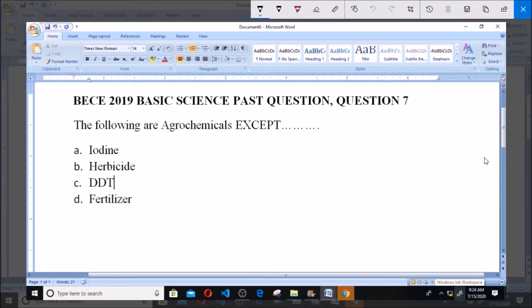Hello, welcome. Today we are going to be doing BECE 2019 Basic Science past question, question 7. The following are agrochemicals except: A) Iodine, B) Herbicide, C) DDT, and D) Fertilizer. Now let's explore these options.